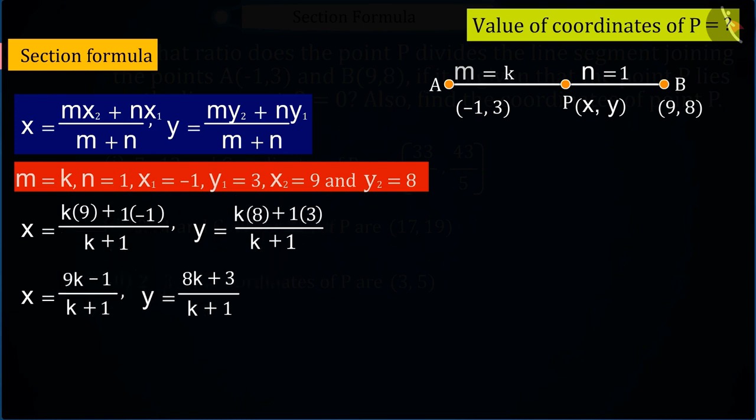Absolutely correct. Using section formula, the coordinates of P will be (9k - 1)/(k + 1) and (8k + 3)/(k + 1).